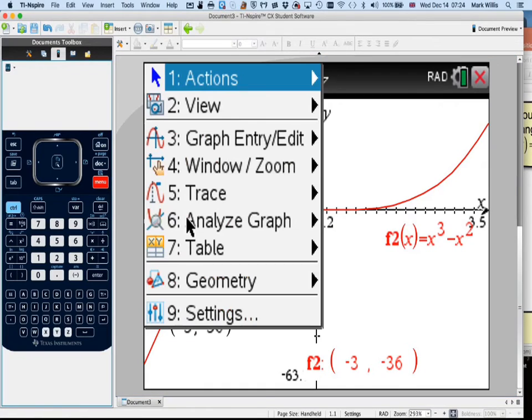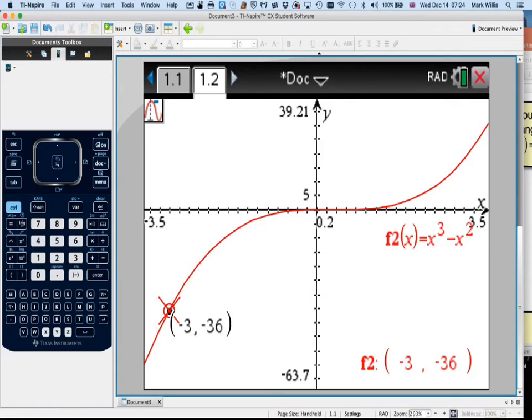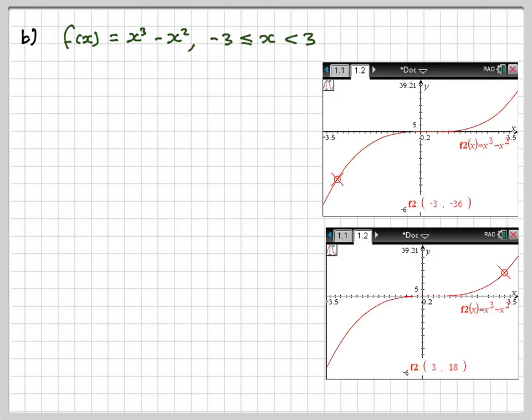Okay. And then I'm going to do the same again. Menu, graph trace, but this time it goes the other way. I can actually enter the value if I wanted to, but you can trace along a graph and then press enter, and then I've got the other value there, 18. So a couple of screenshots of what I've just done.